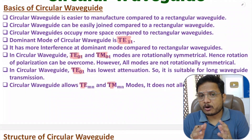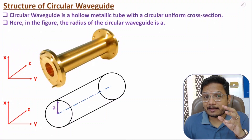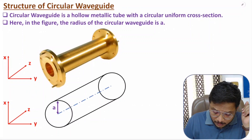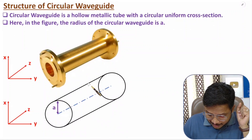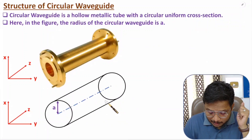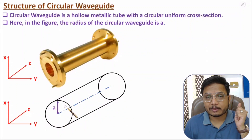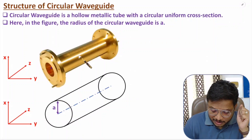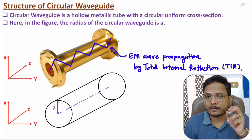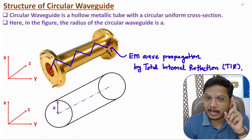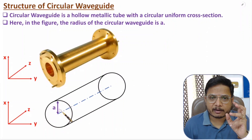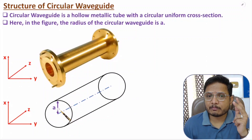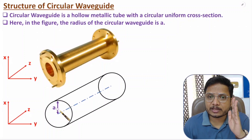Now I'll discuss the structure of circular waveguide. It is a hollow metallic tube having a uniform cross section, and that cross section has the shape of a circle. EM wave propagation happens based on total internal reflection. One very essential dimension to note is the radius of the circular waveguide, denoted as small 'a'.